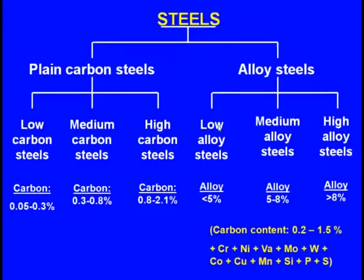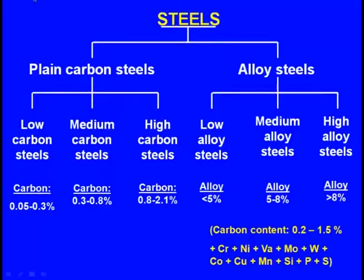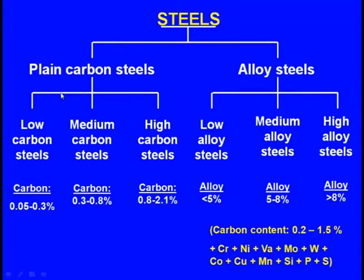Let us quickly review what carbon and low alloy steels are. Steels can be broadly classified as plain carbon steels and alloy steels. In both cases, iron is the base element. In plain carbon steels, carbon is the major alloying element, though other elements like manganese, phosphorus, and sulphur are also present.